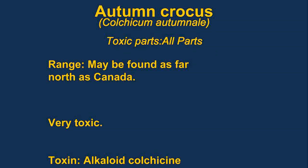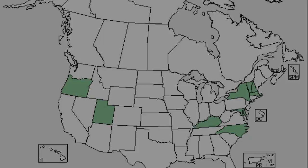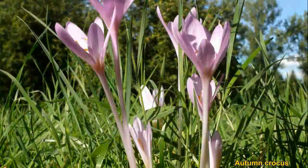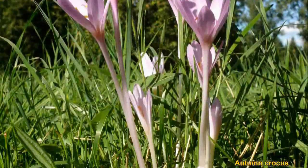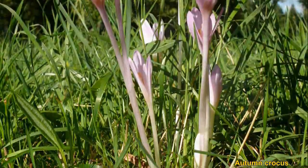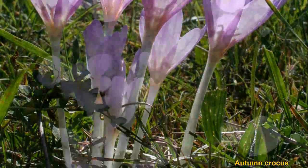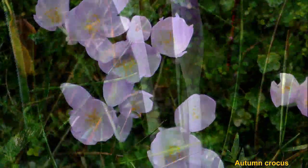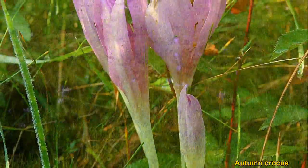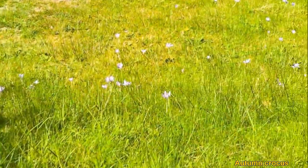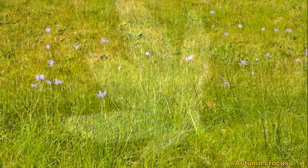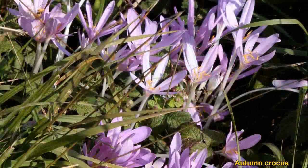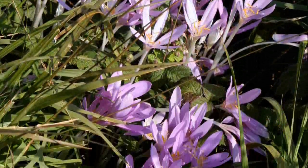Autumn crocus has been occasionally misidentified because it resembles some edible plants. These plants are extremely toxic — a single bite is enough to kill a child. It is generally found in damp woodlands and open meadows. The toxin colchicine is often used in genetic research because it causes polyploidy, or multiple chromosomes.